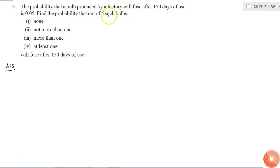So if you take 1 bulb or 2 bulbs or 5 bulbs, the probabilities of each of the bulbs for fusing after 150 days of use is the same. So all the performance of the different bulbs are independent of each other.